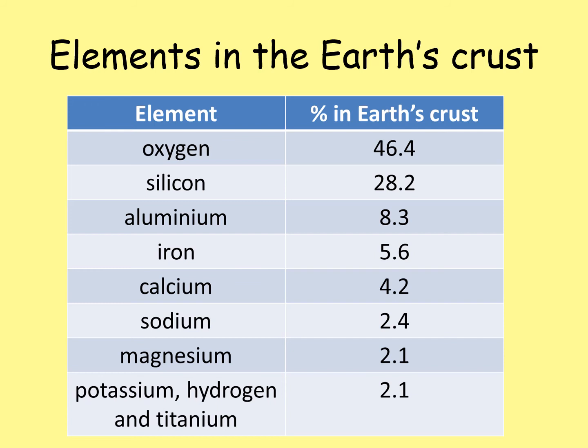Then we have other elements — aluminium, iron, calcium, sodium, magnesium, potassium, hydrogen and titanium — all with smaller proportions of the Earth's crust. It's interesting to note that all except one of those are metals. If you look at the periodic table, the majority of the elements are metals — everything to the left-hand side of the staircase line we drew in an earlier term. Only to the right-hand side do we have the gases and any liquids.